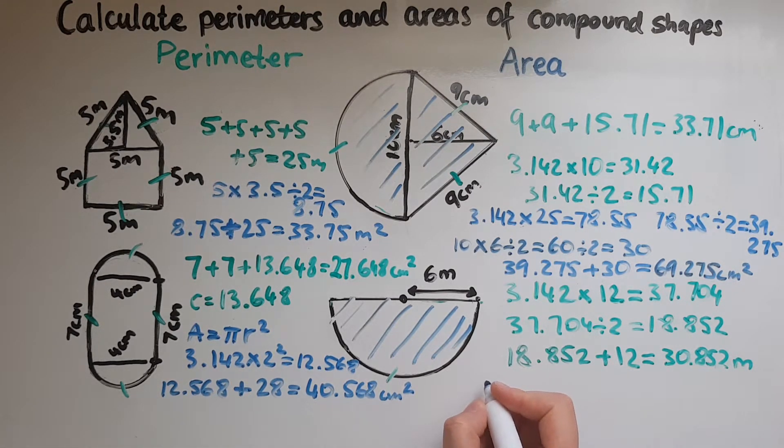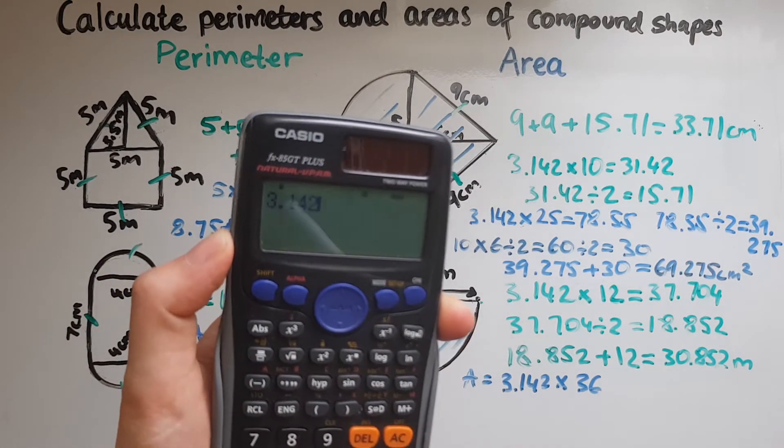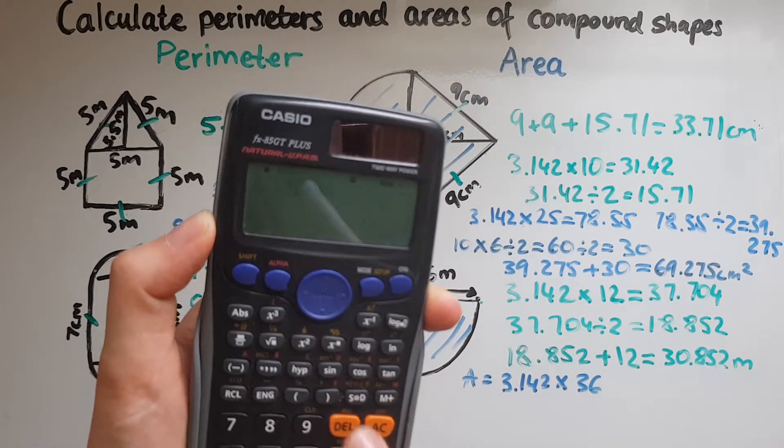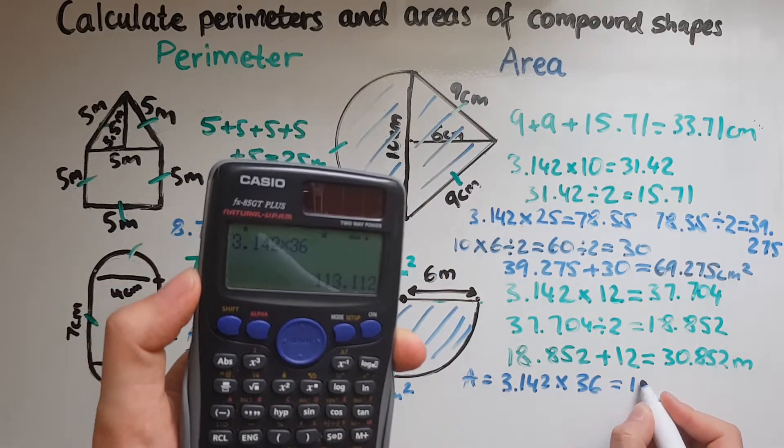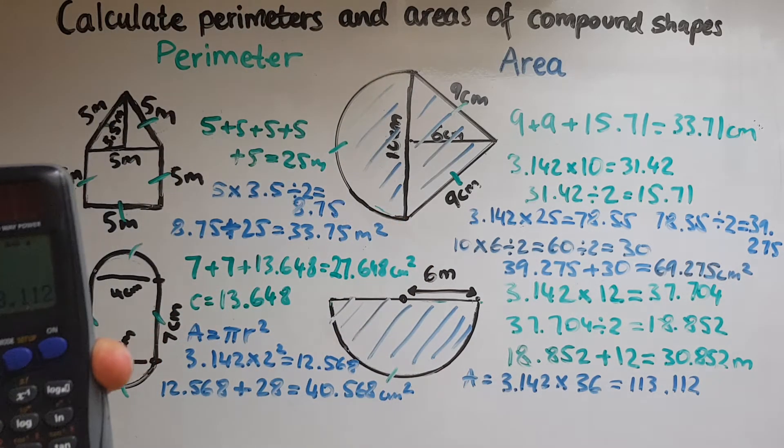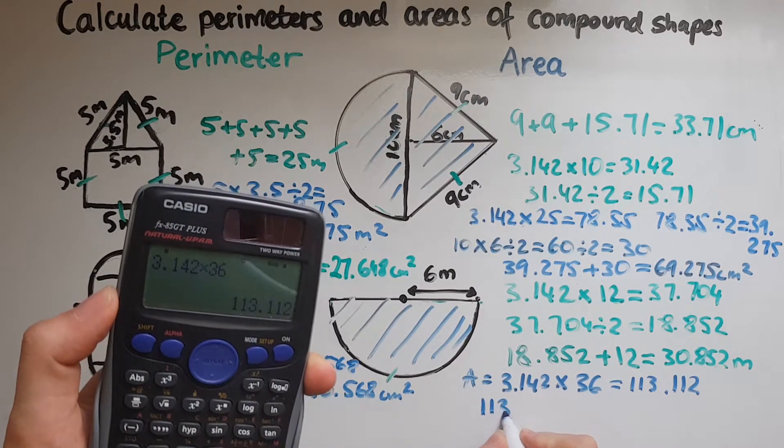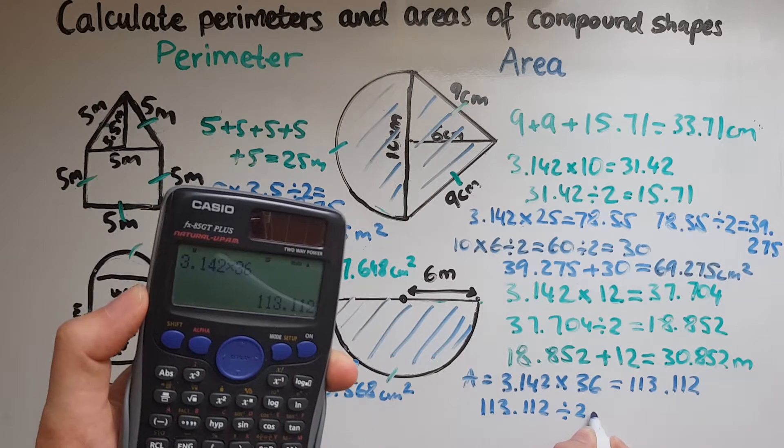Let's work out the area of a full circle and then halve it. Area is pi r squared, so pi is three point one four two times r, in this case six. Six squared is thirty six, so three point one four two times thirty six gives us one hundred thirteen point one one two. This is for the full circle, so half of it will go one hundred thirteen point one one two divided by two.